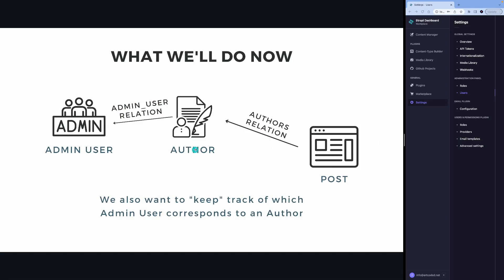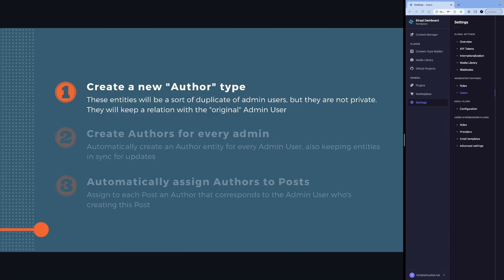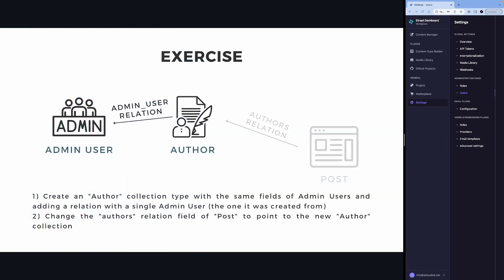We also need to keep track of which admin user each author refers to, so we'll add a one-to-one relation field in the author pointing to the admin user. This will be part of your exercise. To recap: create an author collection type with the same fields as admin user, add a relation field to a single admin user, and change the authors relation field on posts to point to the new author collection.